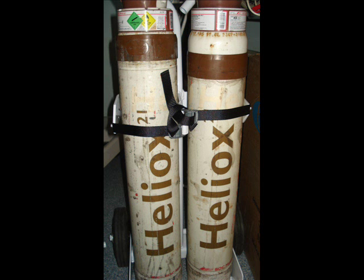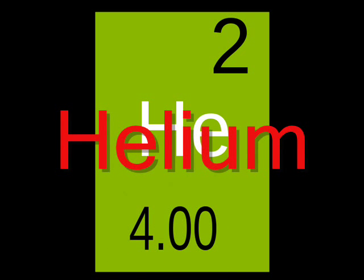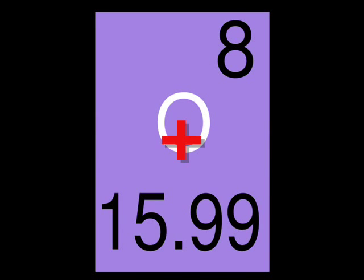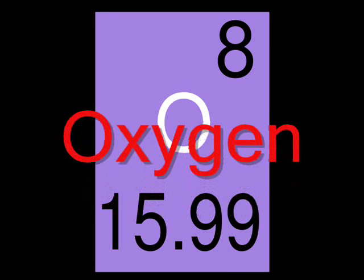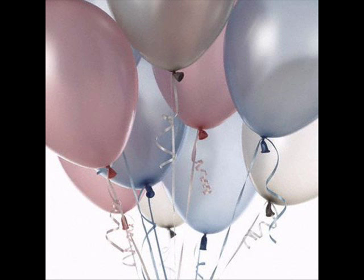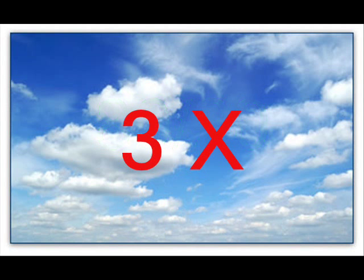Heliox is a mixture of pure helium and oxygen in a gaseous form. It is the second lightest element with the atomic weight of 4. When combined with oxygen, helium reduces the density of the breathable mix. A 70-30 helium-oxygen mixture would be 2.3 times less dense than air, and an 80-20 mix is 3 times less dense.